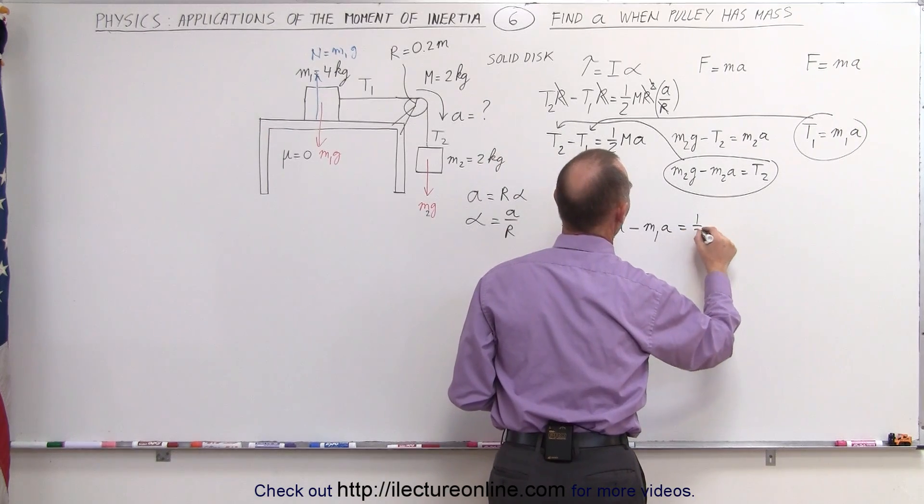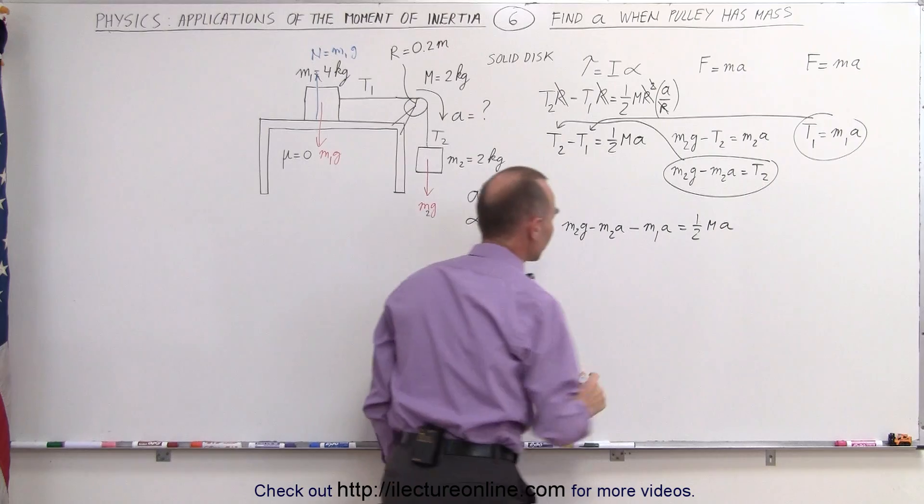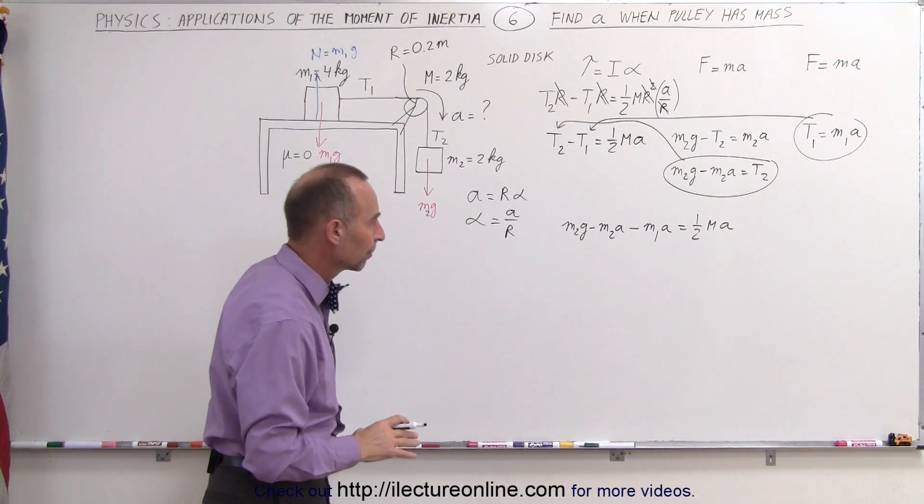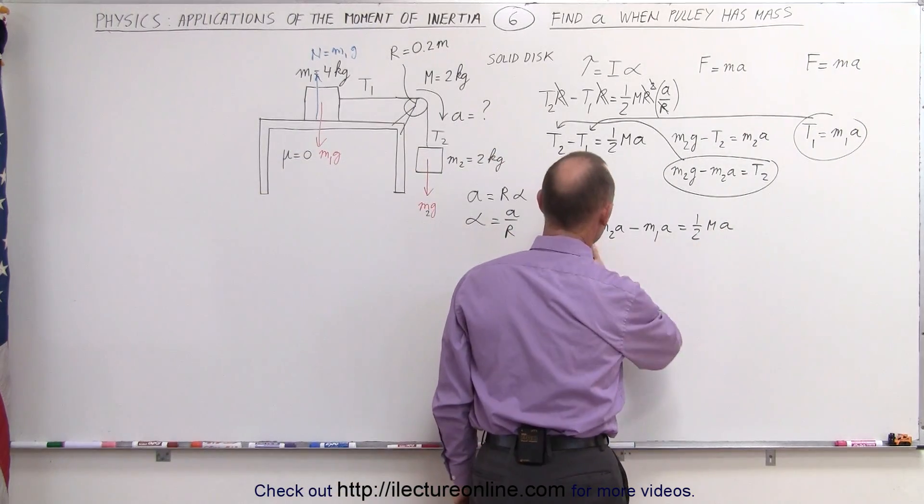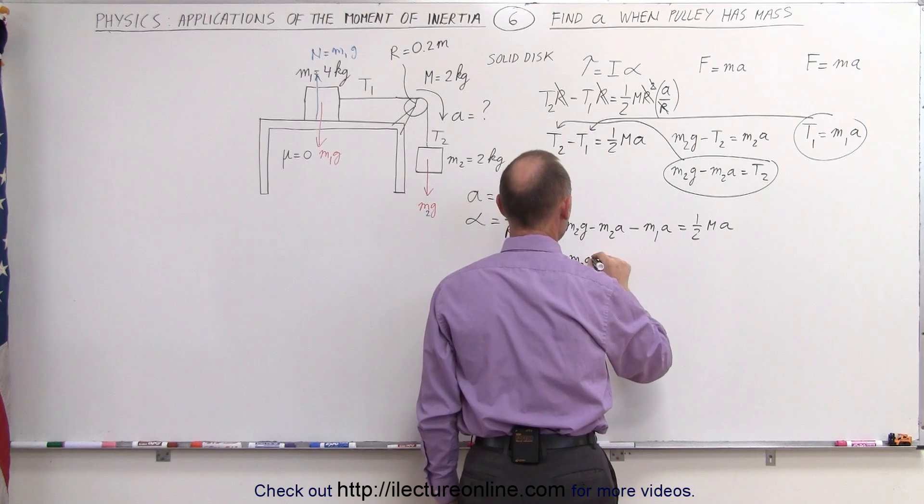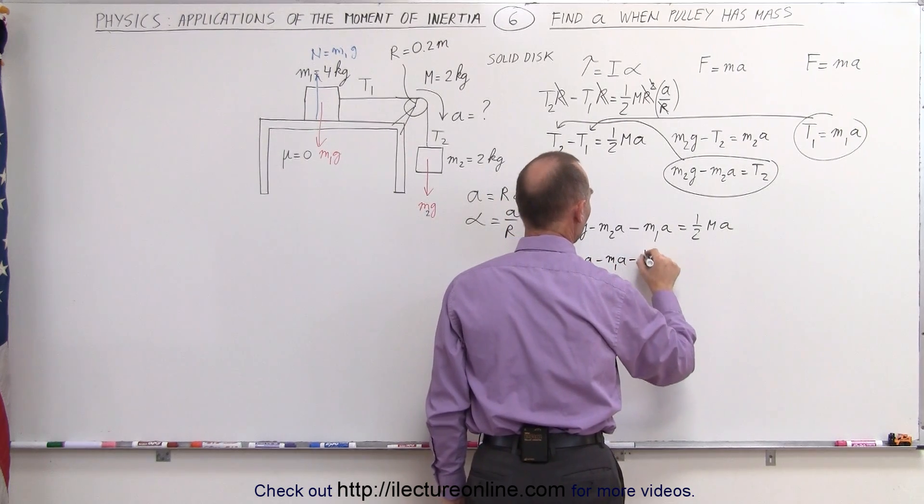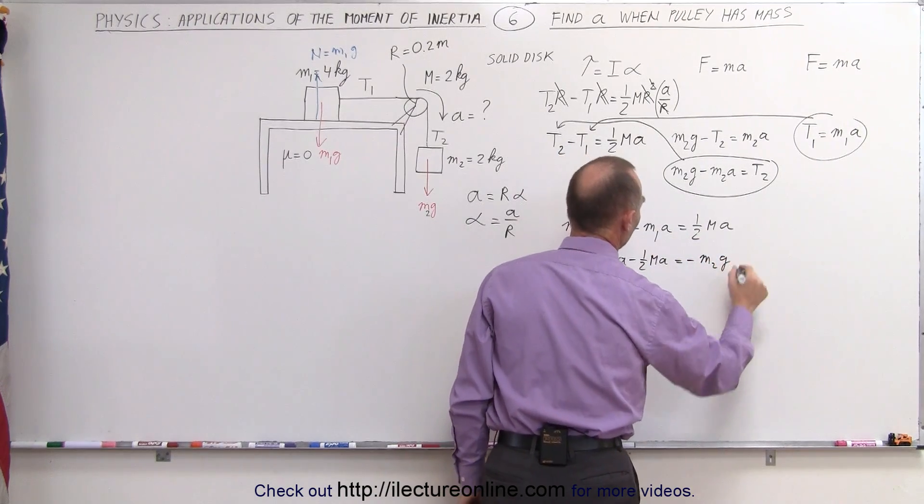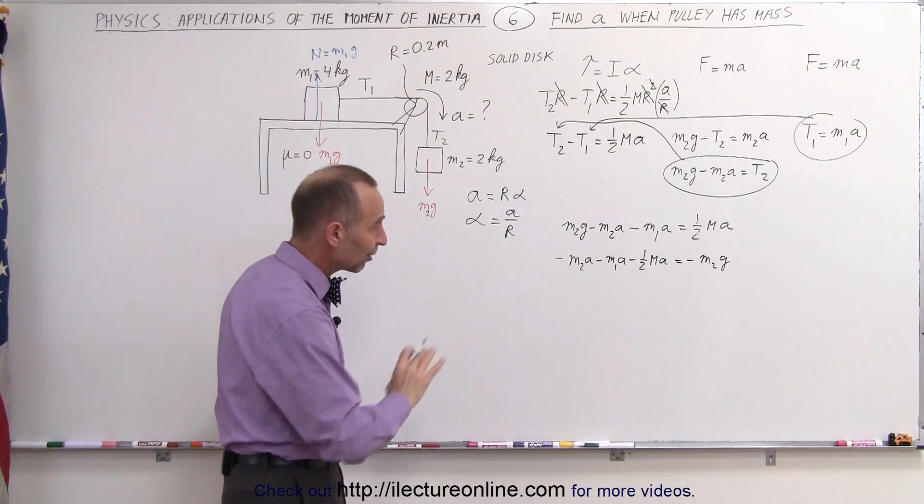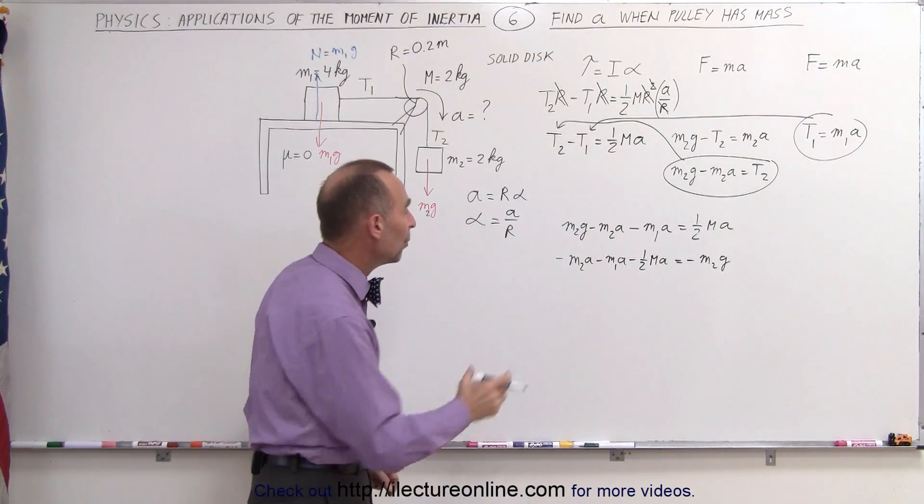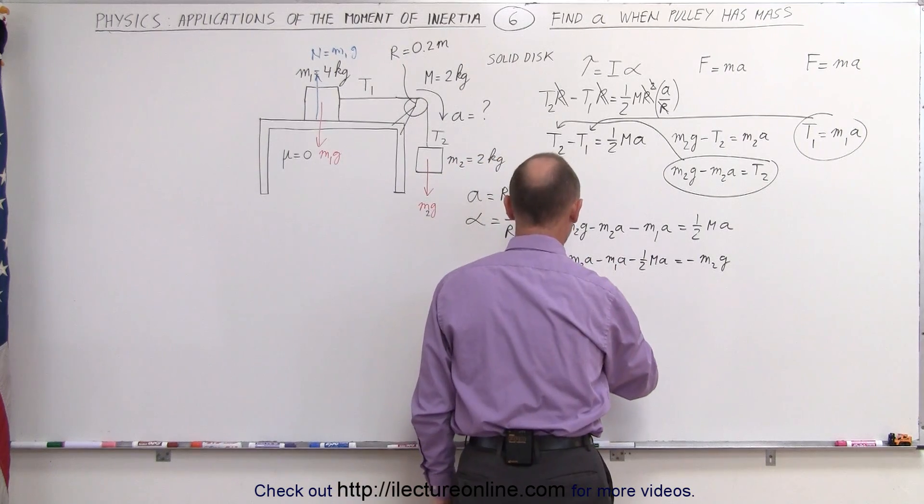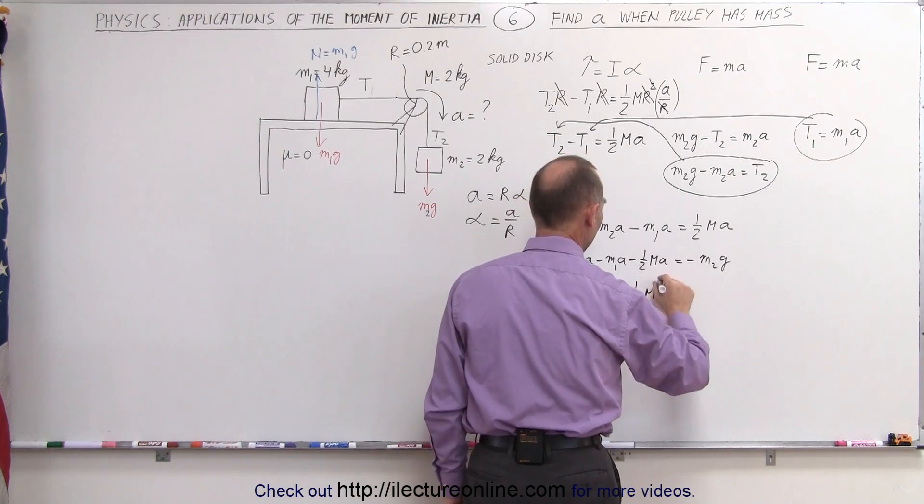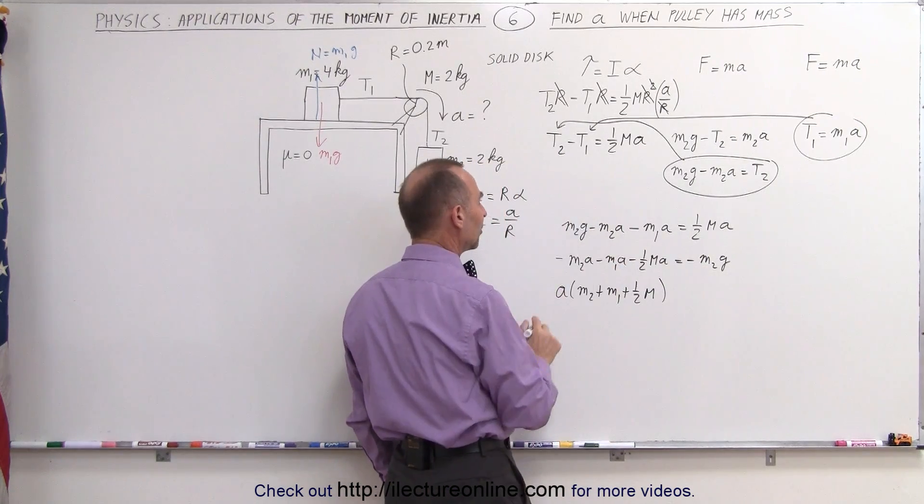And that equals one-half the mass of the pulley times a. Notice all the unknowns are eliminated except for the acceleration. Let's move this to the left side, move that to the right side. I have minus M2a minus M1a minus one-half big Ma equals, move that across, we get minus M2g. Right away we realize we can multiply both sides of the equation by negative to get rid of all the negative signs. And we can pull out an acceleration. A times M2 plus M1 plus one-half big M, that's the mass of the pulley. Notice I multiplied both sides by negative one.